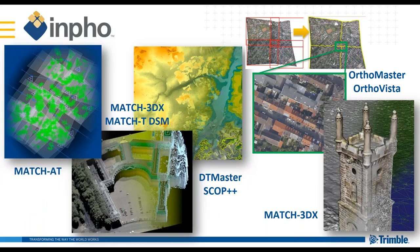When we refer to Trimble Inpho Photogrammetry software, we're referring to software that contains many different modules. We have Match AT, which is the aerial triangulation package. Match T and Match 3DX is the surface generation package, where you can generate anything from a classic DTM to a dense colorized point cloud. DTMaster is our editor with a full suite of editing tools in a 3D environment. Then OrthoMaster and OrthoVista handle ortho rectification and mosaicing.